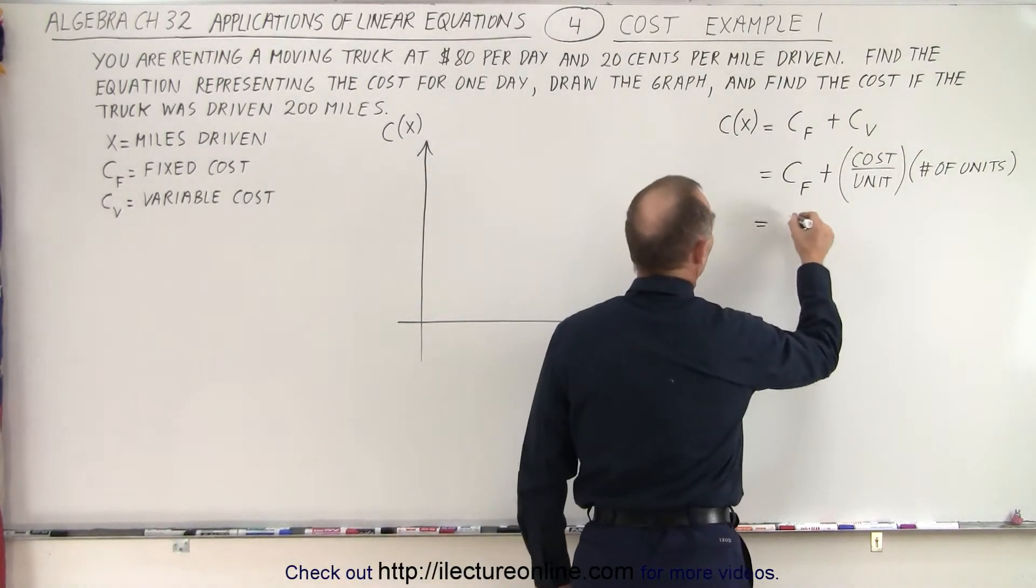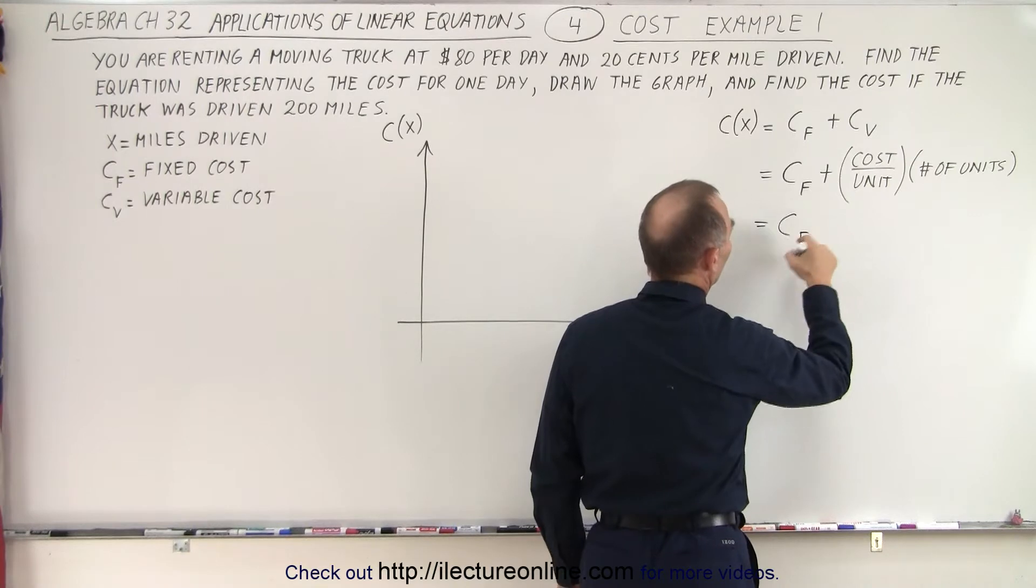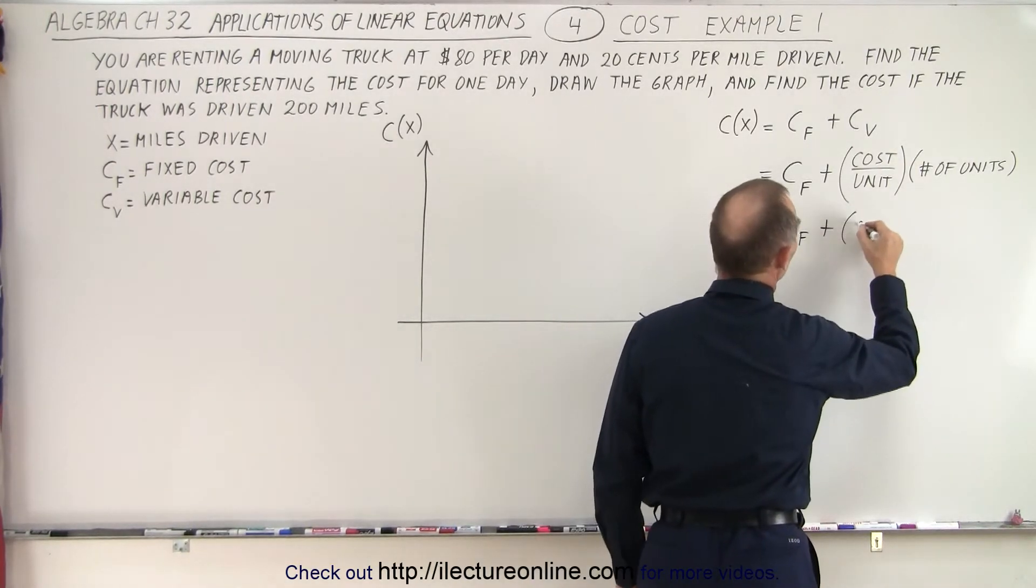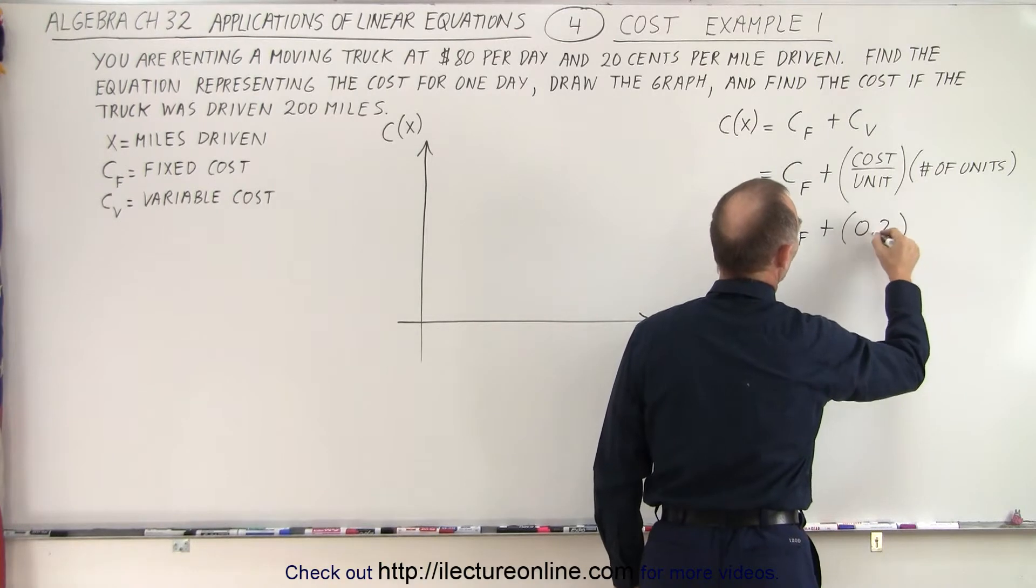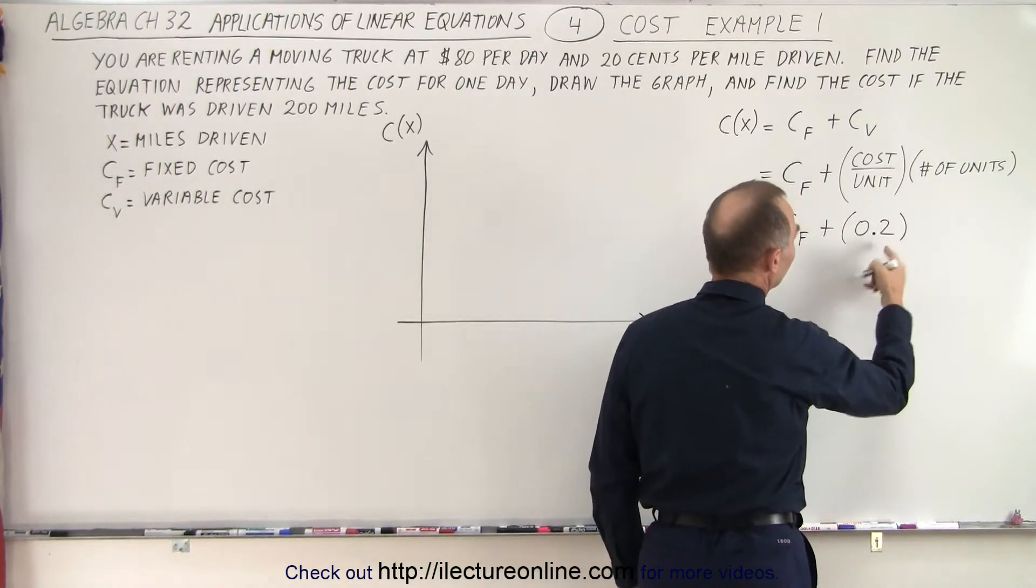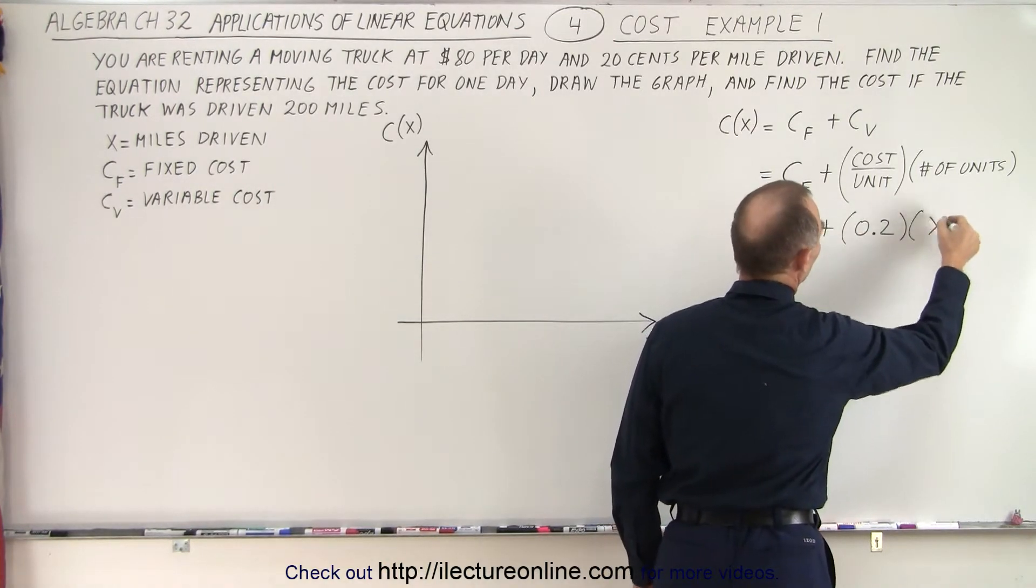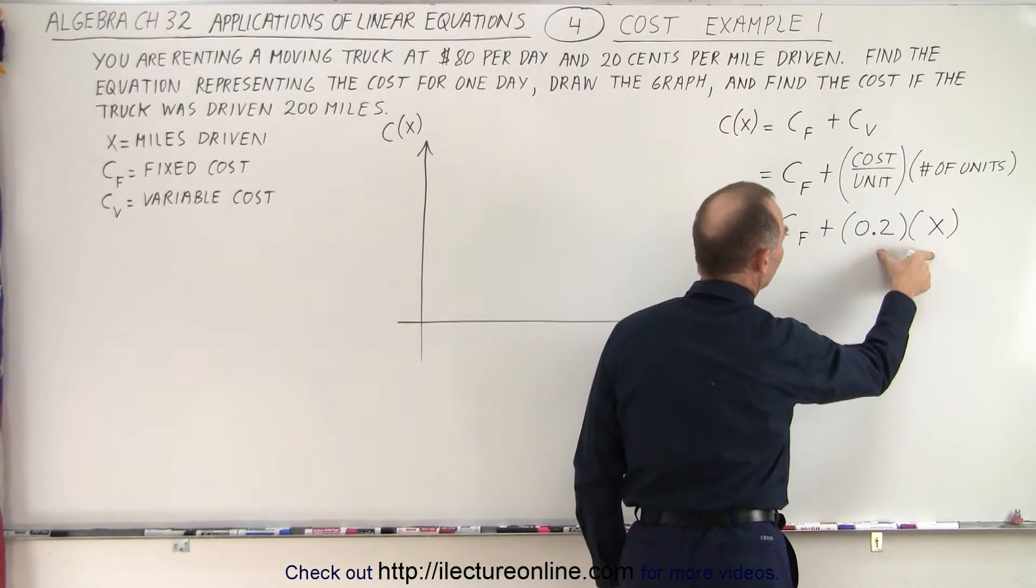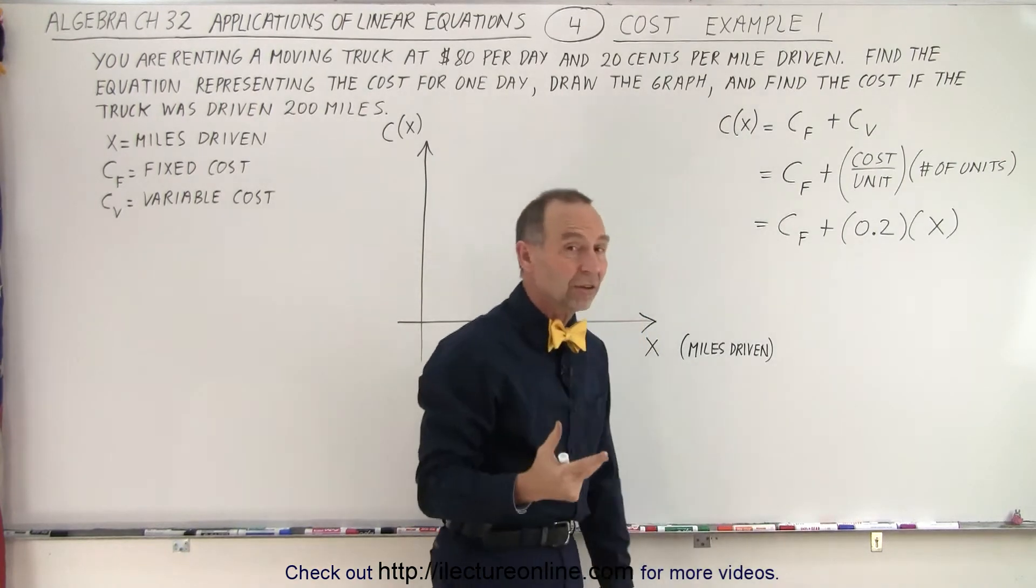So in this case, that's going to be equal to the cost that's fixed plus the cost per unit. Now the cost per unit is going to be $0.2. $0.20 is $0.2. And then the number of units is going to be x. So 0.2 times x, that represents the variable cost. C sub f represents the fixed cost.